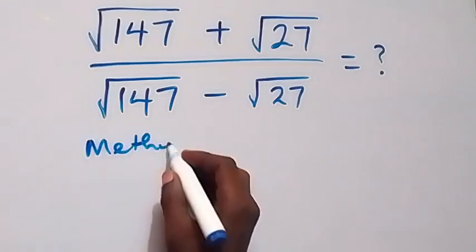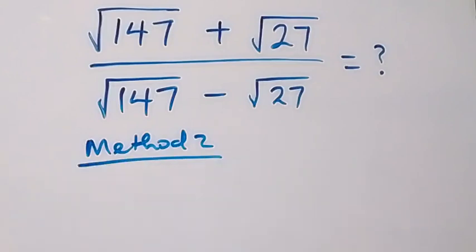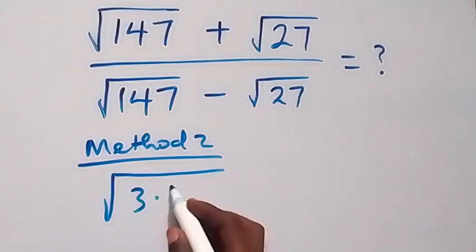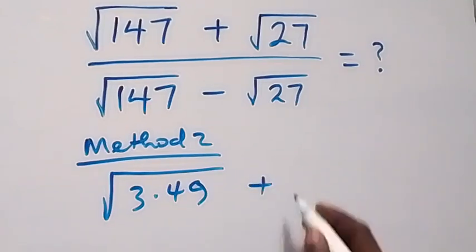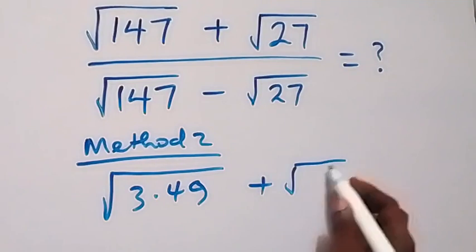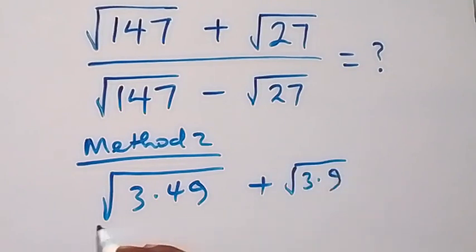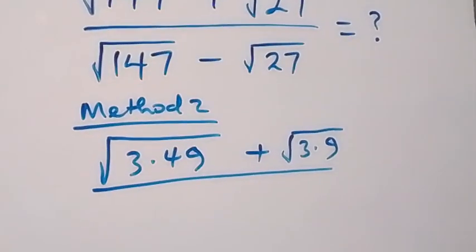In method two, here we can rewrite what we have. Root 147 can be written as root 3 times 49, then plus root 27 which becomes root 3 times 9, over the same denominator.